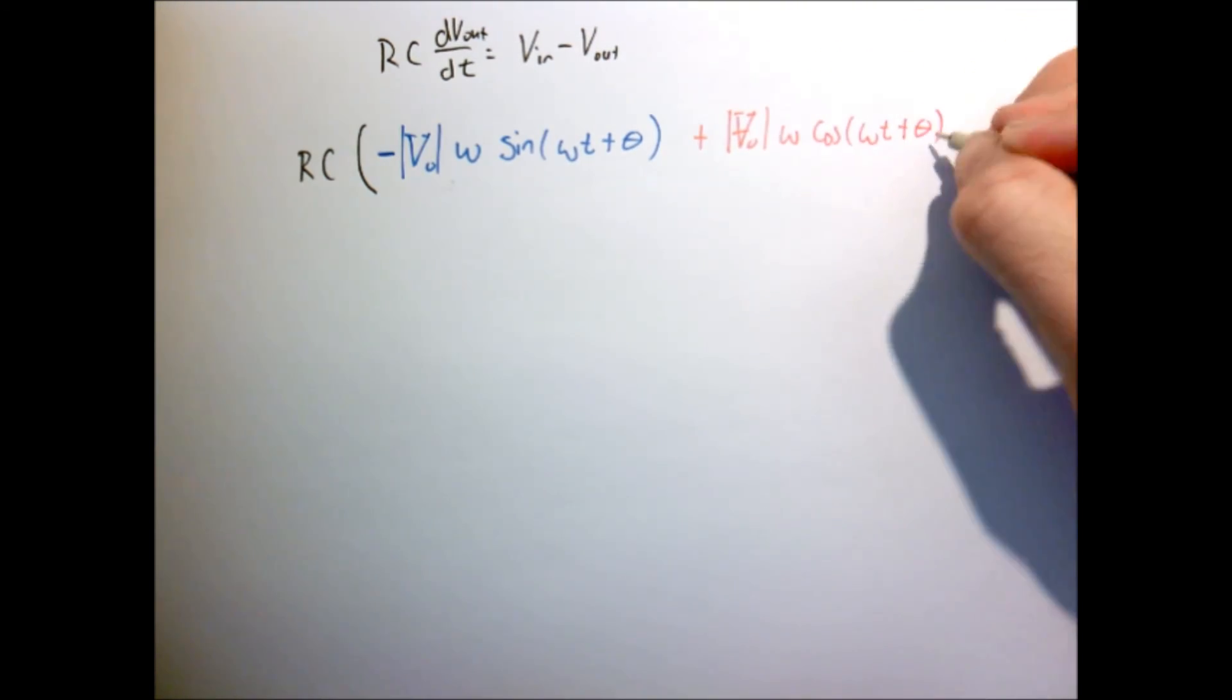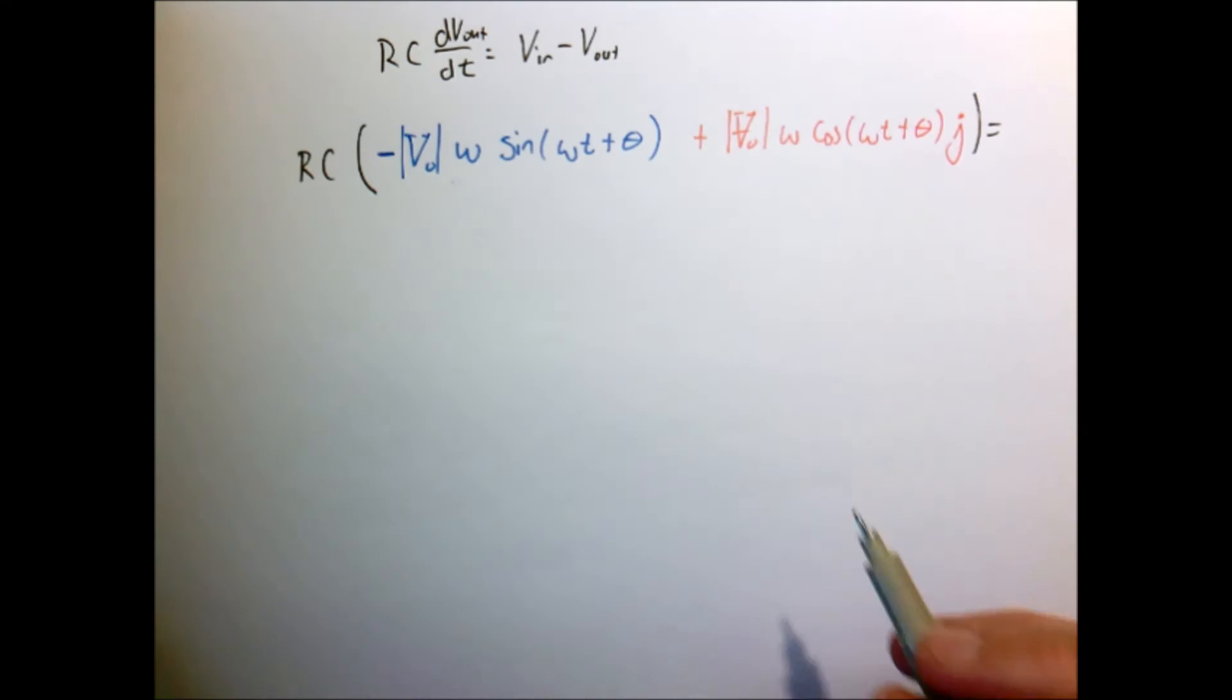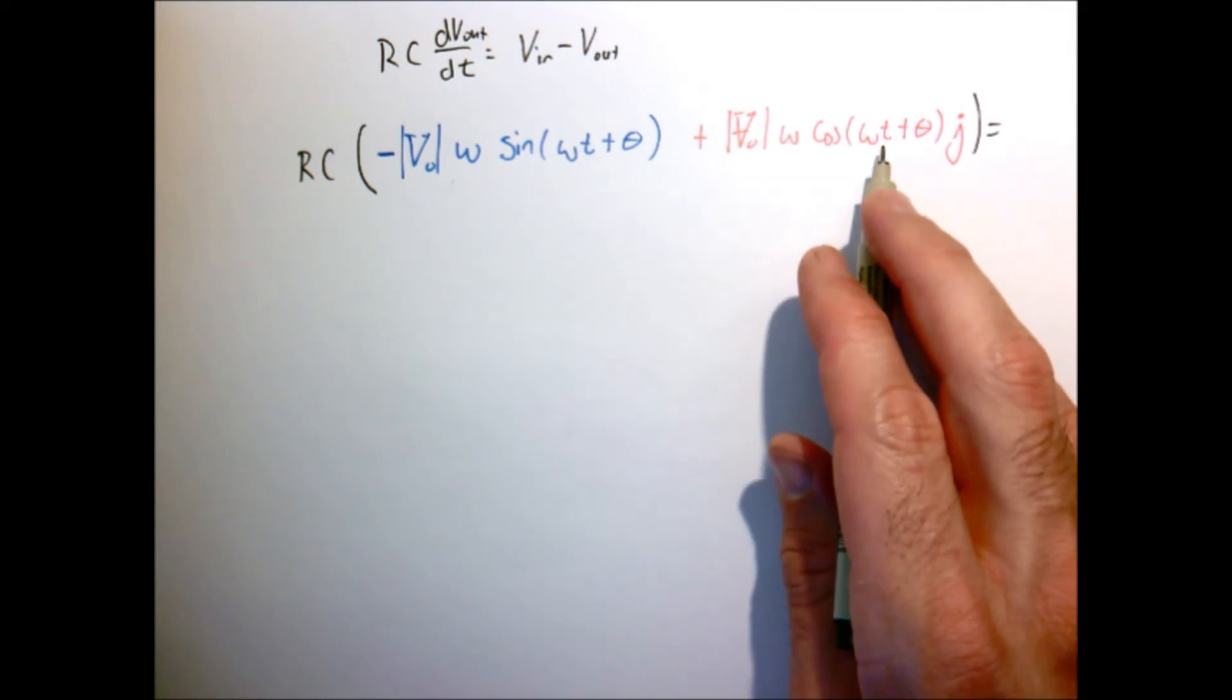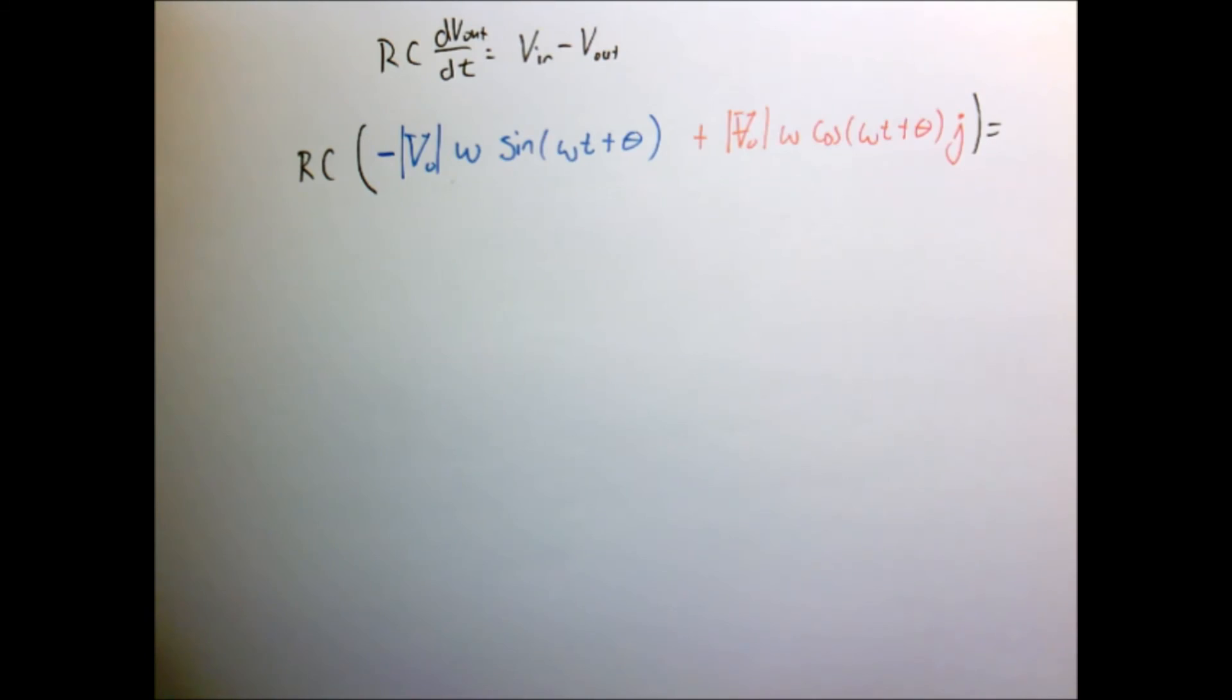So let me just take the derivative of what we had for V naught. So that is the derivative d by dt of V out. So just our assumed form. So the cosine turned to sine, the sine turns to cosine. We picked up a factor of omega.